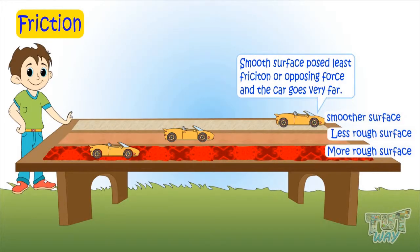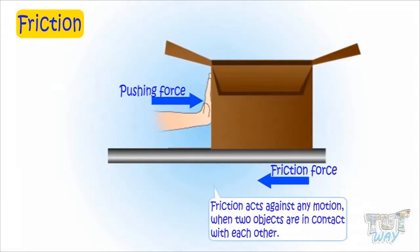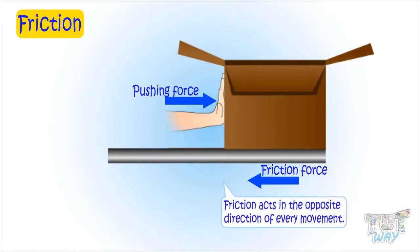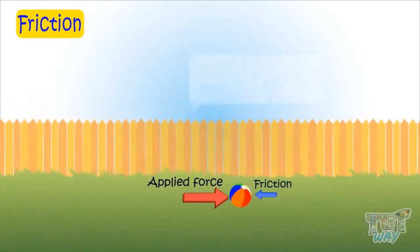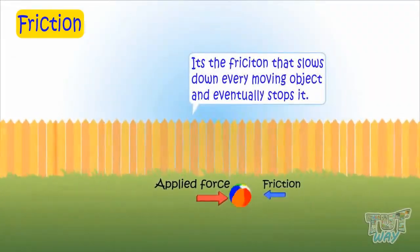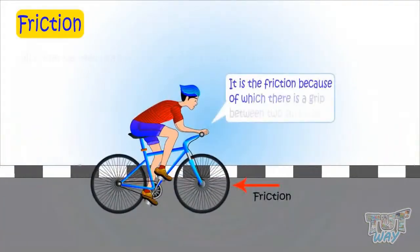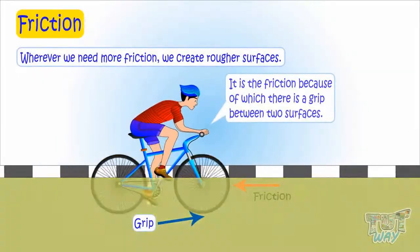The point you need to remember is: friction acts against any motion when two objects are in contact with each other, and friction acts in the opposite direction of every movement. It is friction that slows down every movement and eventually stops it. And it is friction because of which there is a grip between two surfaces.